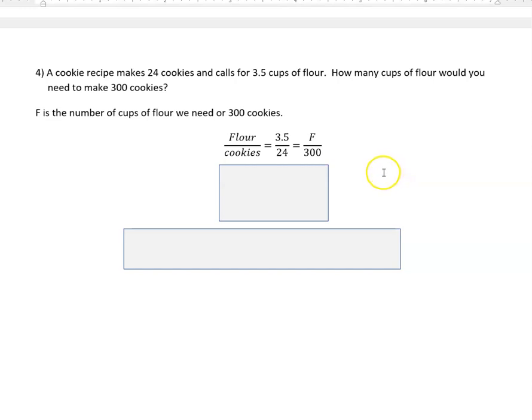I'm going to cross multiply, 24 times F and 3.5 times 300. That gives me 24F equals 1050, and then I want to divide both sides of my equation by 24 because that's the coefficient here next to the F.